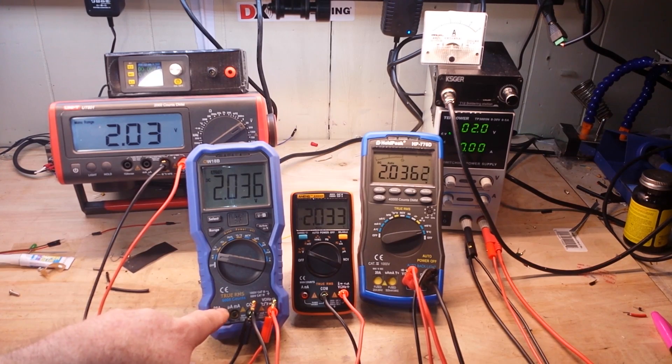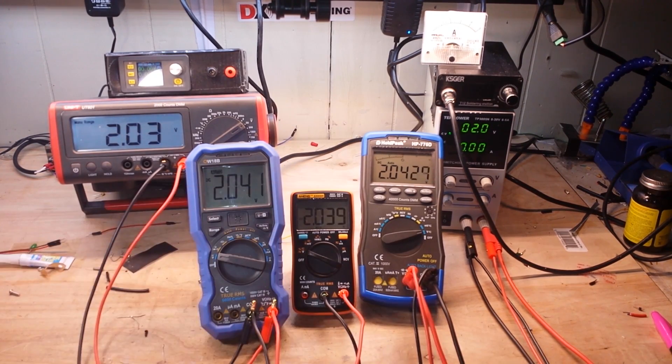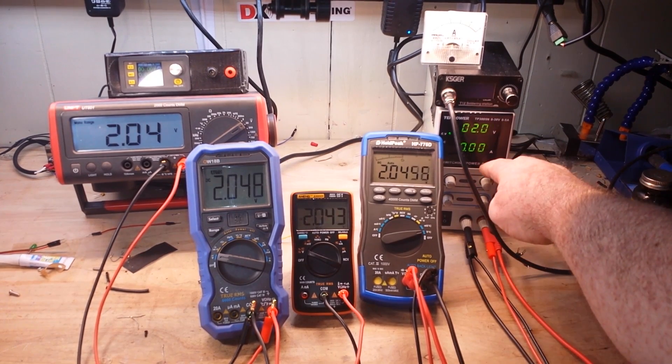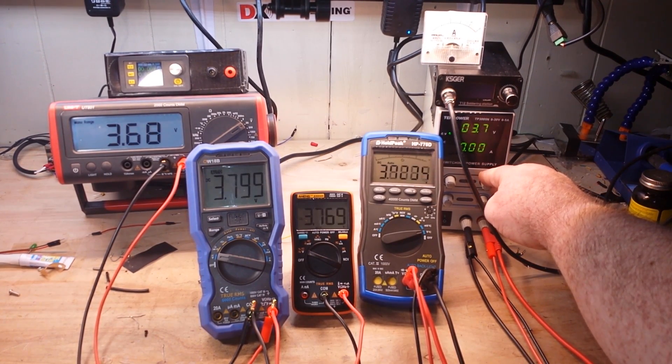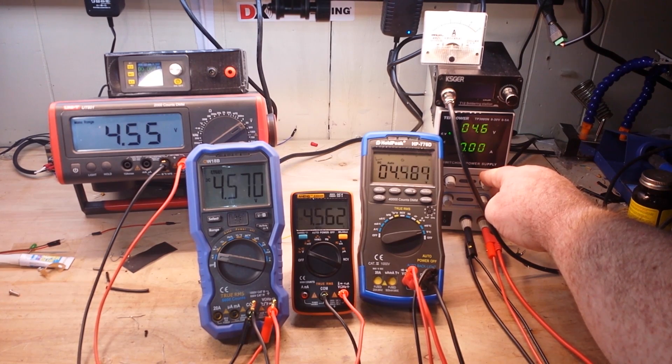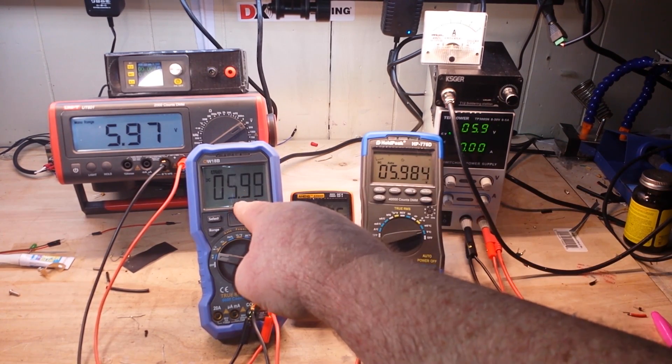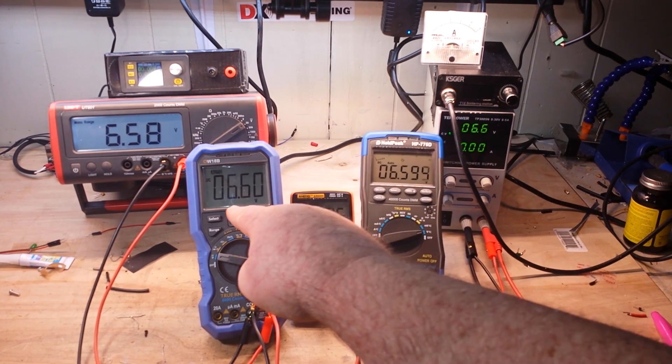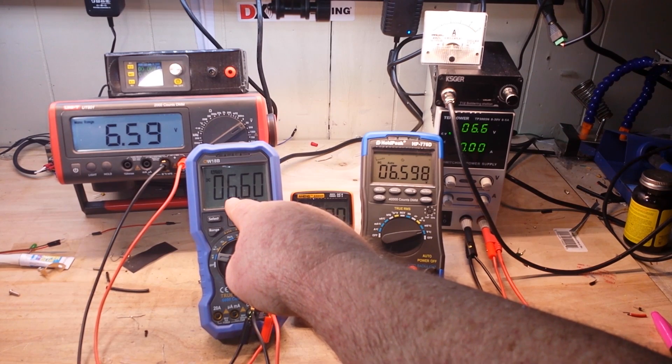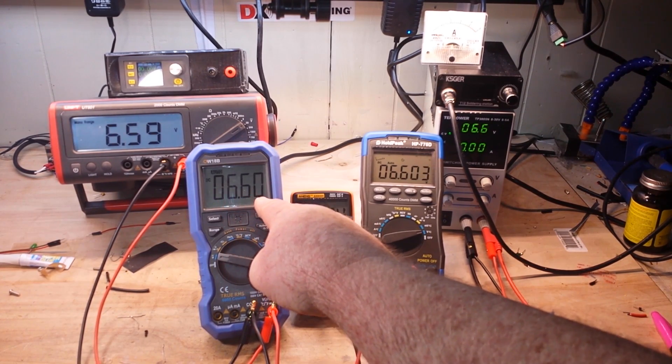Now, our next one in line is 6,000 counts. So as we pass 5.999 volts, it is going to switch. There we are at 5999 and she switches. She switches a little early. But you get the idea. As 6.00, we have lost the digit of precision.